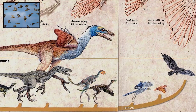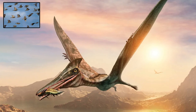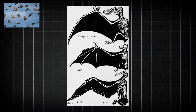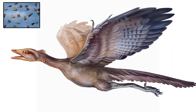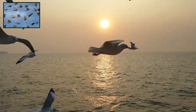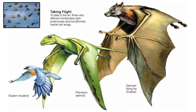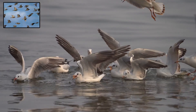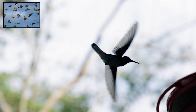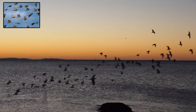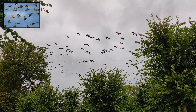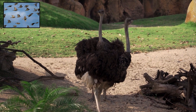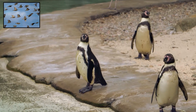Later, vertebrates evolved flight through entirely different adaptations. Pterosaurs were the first vertebrates to fly, with wings formed from a membrane stretched over a long finger. Birds came next, evolving feathers and lightweight bones that made flight more efficient. Their wings, formed from modified forelimbs, allowed them to glide, hover, and soar through the skies. Millions of years later, mammals joined the airborne ranks with bats, whose wings are made from stretched skin over elongated fingers. Birds used flight to migrate thousands of miles, spreading to every continent. Bats used it to hunt insects at night, using echolocation.